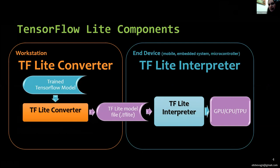TensorFlow Lite consists of two components: converter and interpreter. TensorFlow Lite Converter converts TensorFlow models into a TensorFlow Lite model, an efficient form for use by the TensorFlow Lite interpreter, which can introduce optimizations to improve binary size and performance.